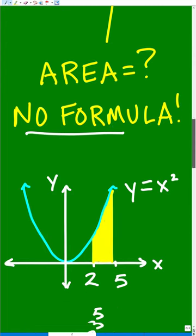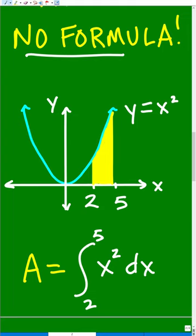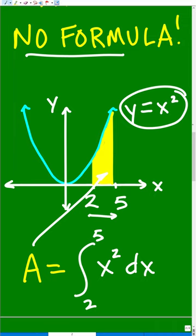There is no formula. We have to use calculus. So this is an example of this particular problem. We're going to find the integral between 2 to 5 underneath this curve right there. That will tell us the area of this little shape right there.